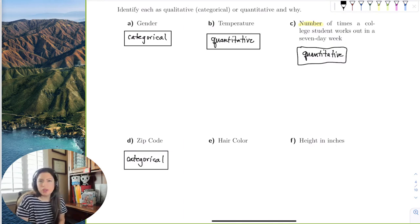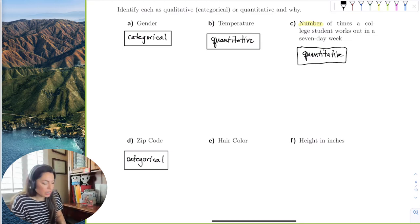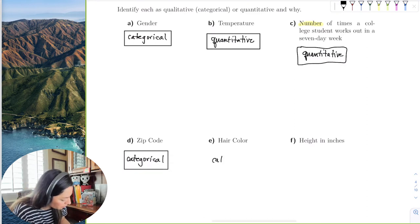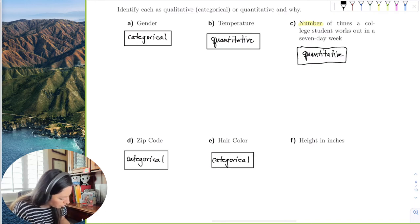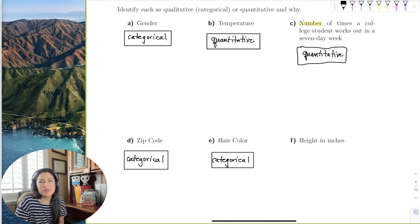How about hair color? Can I add a bunch of hair colors up and get an average hair color? No, right? The answer is a word. It's not a number, and so it's categorical. Height in inches. And so we just reviewed this. So we can always find an average height, and so the answer is a number, and its results can give meaningful information. So this is quantitative.